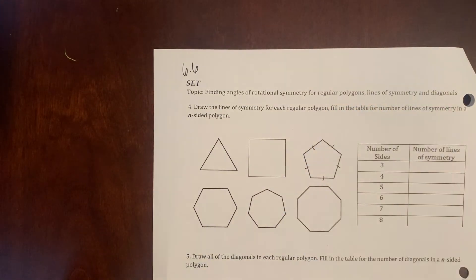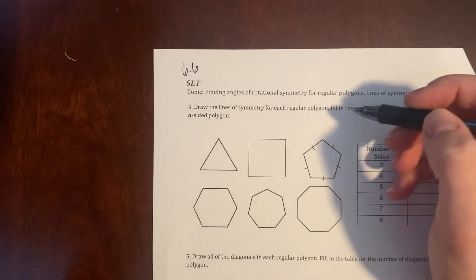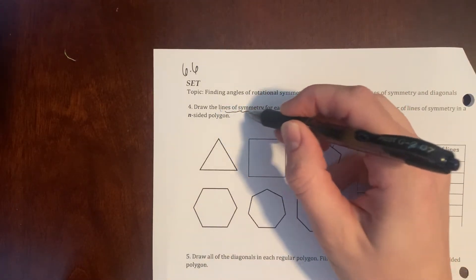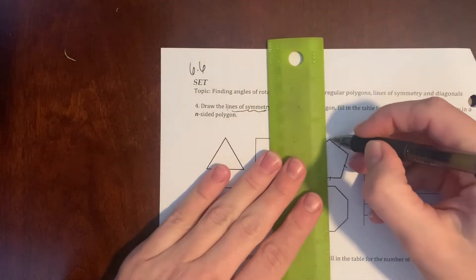And the line of symmetry is the line that reflects onto itself. So that means if I draw a line, try and get it close to center as possible from here to here, if I fold on that line it's going to fold onto itself exactly.